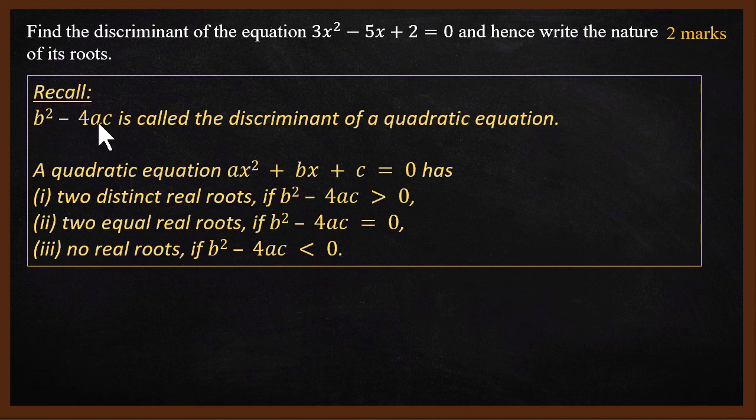Why are we interested in discriminant? We can write the nature of the roots using the value of the discriminant. If the discriminant value is positive, greater than zero, then it has two distinct real roots. If the discriminant is zero, it has two equal real roots. If the discriminant value is negative, less than zero, there are no real roots. That's the theory. Now let's solve the problem.